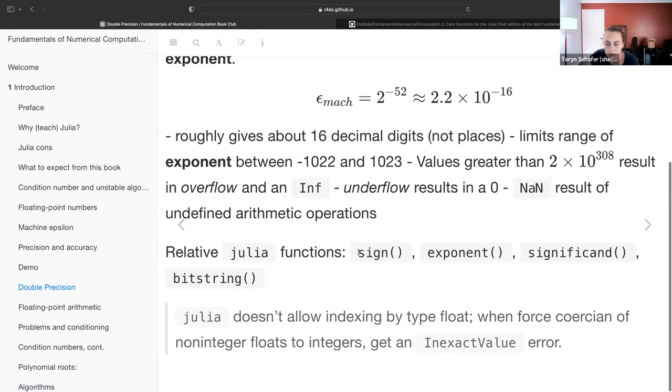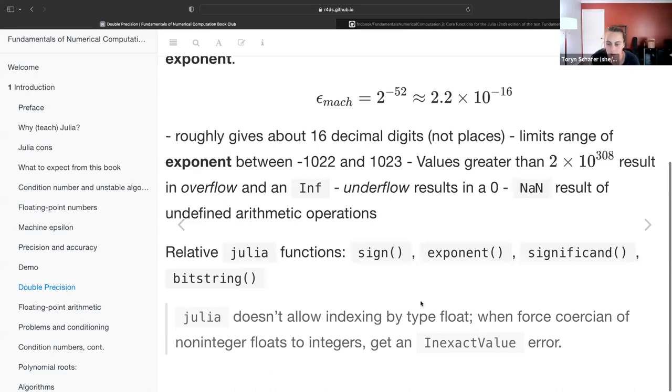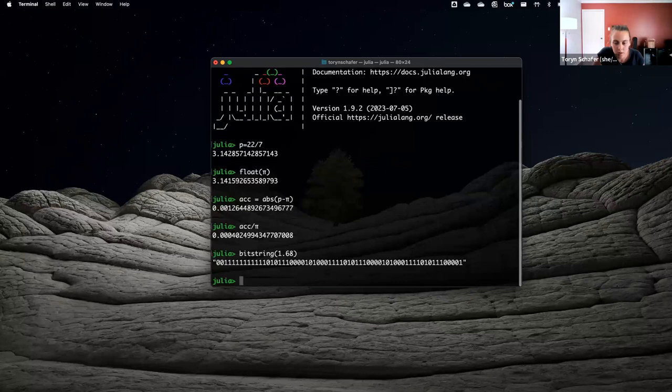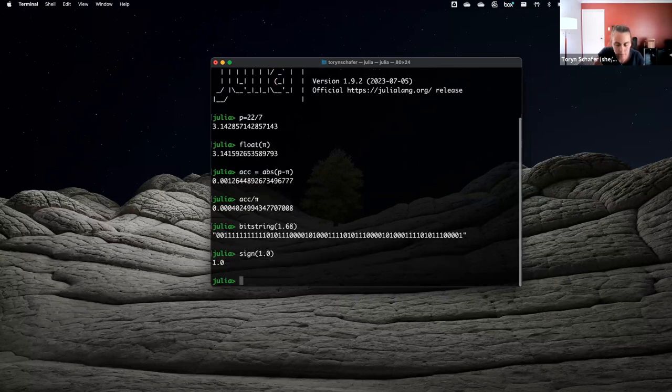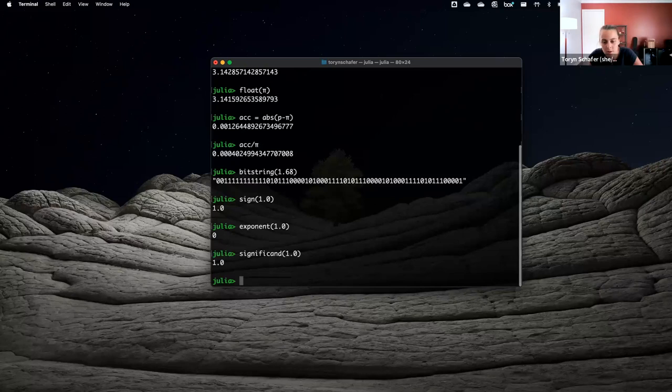We can get all of these pieces of a floating point number with these related Julia functions: sign, exponent, significand, and bitstring. You can see all of the bits of a number. You can see the sign, the exponent, and the significand. You can use all of these in Julia.